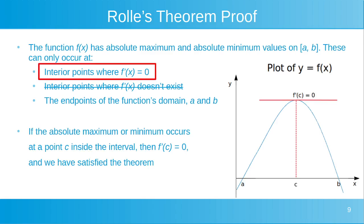For the first option — that the function f of x has absolute maximum and absolute minimum values at interior points where the derivative f prime of x is equal to 0 between a and b — if the absolute maximum or minimum occurs at a point x equals c inside the interval, then the derivative f prime of x will be equal to 0. So we have satisfied the theorem.